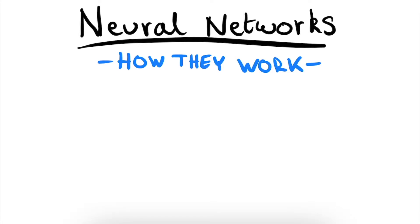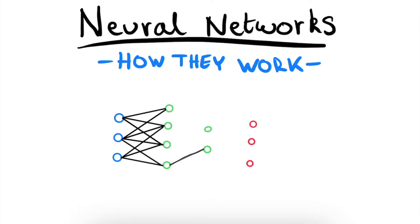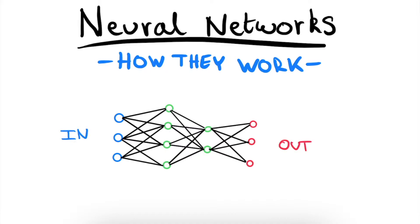Hey guys, welcome back to a new video. In this session we'll be looking at how artificial neural networks train themselves and thereby become one of the most widely used machine learning algorithms out there, solving a wide variety of problems. Artificial neural networks are fascinating, and the process of how they train themselves is a very nice application of partial derivatives. If you know how to calculate partial derivatives and understand what they mean, you'll be able to understand how neural networks train themselves. We'll focus on a very basic neural network, because if you fundamentally understand how it trains itself, you'll be able to understand more complex ones.